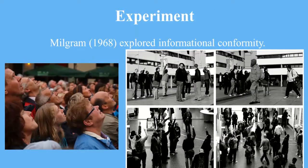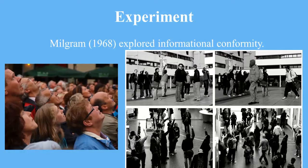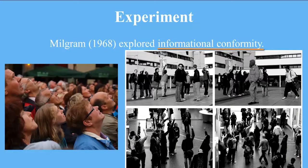On the other hand, Stanley Milgram demonstrated that the actions of others may also serve as informational cues on how to behave, especially during ambiguous or uncertain situations. Milgram placed confederates on a street corner and instructed them to gaze intently at the open sky. As the number of confederates increased across trials, so too did the number of passing pedestrians who stopped and stared upwards at the sky.